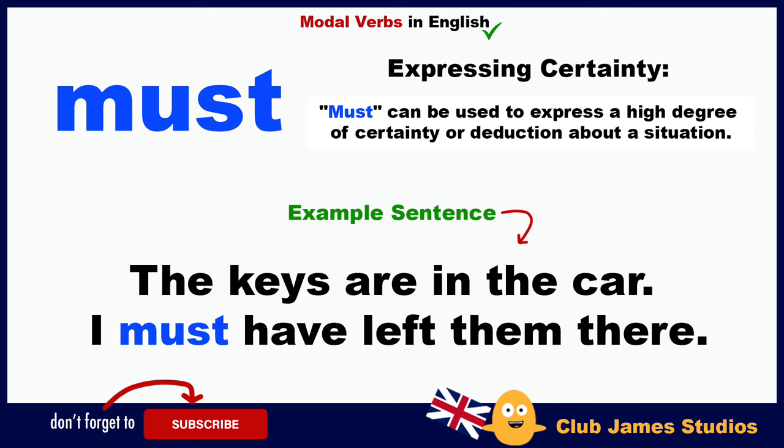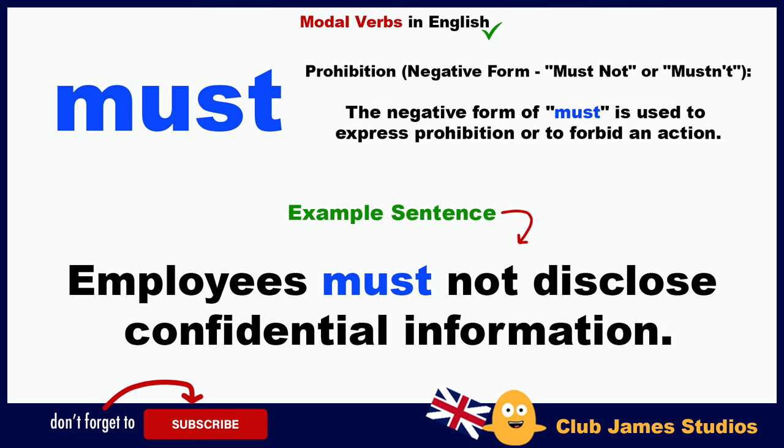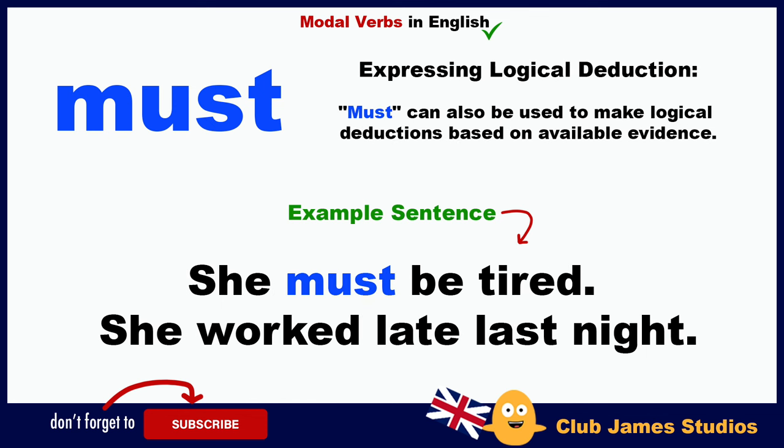Expressing certainty: 'must' can be used to express a high degree of certainty or deduction. Example: the keys are in the car — I must have left them there. Prohibition — negative form 'must not' or 'mustn't': used to express prohibition or to forbid an action. Example: employees must not disclose confidential information. Expressing logical deduction: she must be tired — she worked late last night.